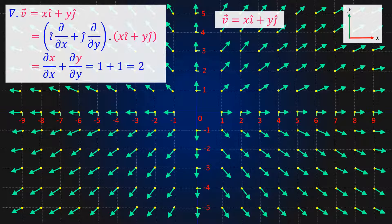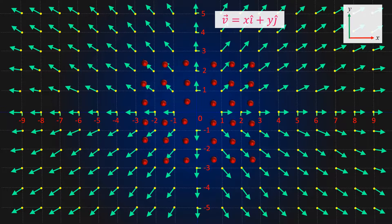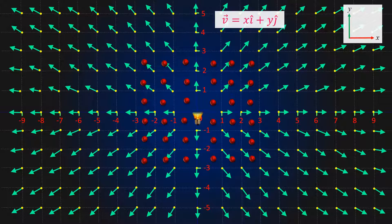Taking divergence of this vector field we get a positive number. If we consider a point at (0,0), it seems all the vectors are pointing in a direction away from this point. If we consider this vector field to be a velocity vector field, it gives a feeling that a fluid is flowing outward from that point, which is acting as a source — just like heating a gas causes the molecules to expand and move in an outward direction.